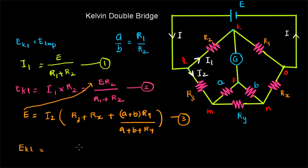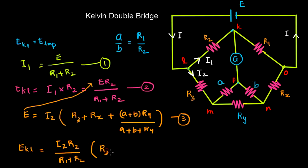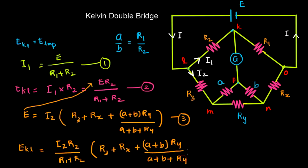E_KL is equal to I2 R2 divided by (R1 plus R2), multiplied by R3 plus RX plus (A plus B) multiplied by RY divided by (A plus B plus RY). Let us call this equation number 4.